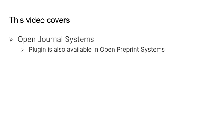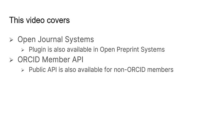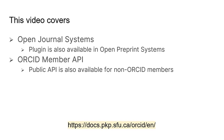The plugin is also available in PKP's Open Preprint Systems, and it works in much the same way as what you will see in this video. The video also discusses the member API, which is available to ORCID member organizations. Journals from non-member organizations are invited to use the public API, which functions in a similar way. For more information, please visit the ORCID plugin guide in the PKP documentation.